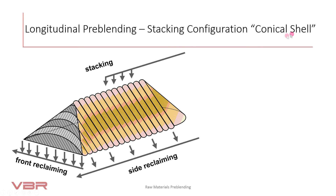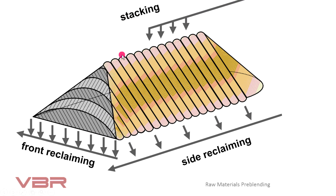Another stacking system has the stacker moving stepwise in longitudinal direction, with the next step only executed after completing the cone up to the full pile height. Reclaiming is done laterally with a side reclaimer — a front reclaimer should not be used with the conical shell stacking method. The conical shell method is normally used in case of sticky materials and when the homogenizing efficiency is not that important — in other words, when we already have very homogeneous qualities of raw materials in the quarry.